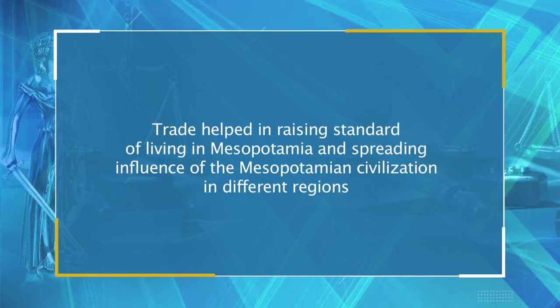Despite lacking many important features, tribals also participated in commercial relations based on different treaties. The sources confirm that there was foreign trade along the Euphrates river into the Mediterranean littoral and the Persian Gulf. Trade helped in raising the standard of living in Mesopotamia and spreading the influence of Mesopotamian civilization in different regions. The majority of everyday necessities — including grains, date palms, wild and domesticated animals for food, clothes made of animal hides, fur or fleece, clay for creating pottery, soil and water for manufacturing bricks, and basic wood and stone for construction — were all probably readily available within Mesopotamia.